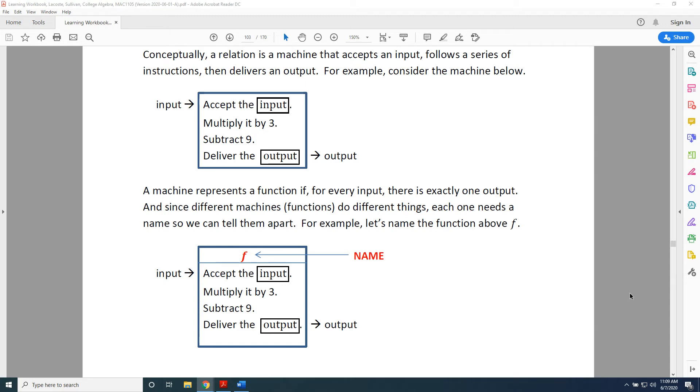The topic of this video is understanding functions. Conceptually, a relation is a machine that accepts an input, follows a series of instructions, then delivers an output. For example, consider the machine below.